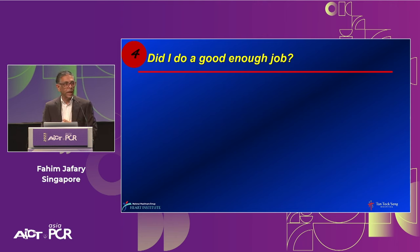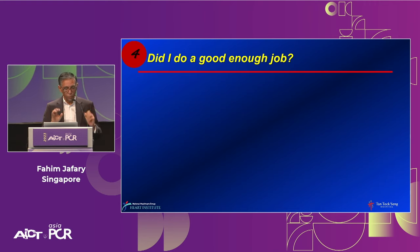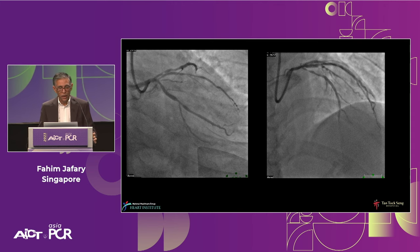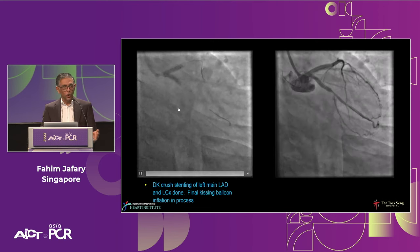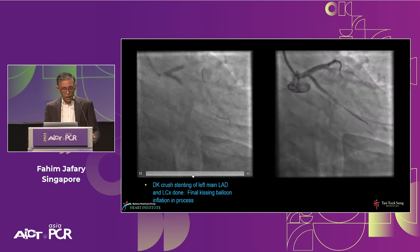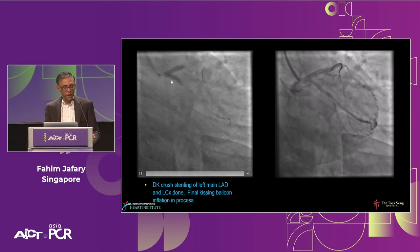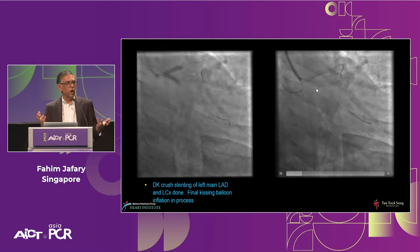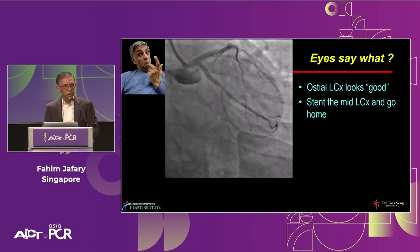Finally — did I do a good enough job? Here's a patient with ACS, turned down surgery, with critical LAD disease, moderate-looking ostial circumflex disease, and another lesion downstream in the circumflex. We did a DK crush — on the left side you can see final kissing balloon in the circumflex and left main LAD with appropriate size balloons: a 3.25 balloon in the circumflex and 3.25 in the left main. The angiographic result looks pretty good — my eyes say the ostial circumflex looks good and all I need is one more stent mid-vessel.